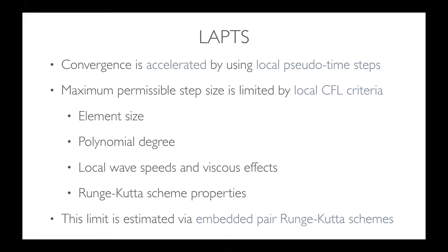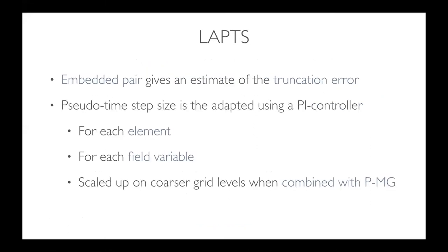The time step limit is estimated using an embedded pair Runge-Kutta scheme. On each element, the embedded pair gives an estimate of the error in pseudo-time, which lets you control the pseudo-time step size per element. This is adjusted dynamically for each element and each field variable, and it can also be scaled up on coarser grid levels when using p-multigrid, so the pseudo-time step size can be made larger as we go to coarser levels.